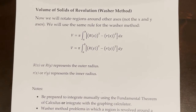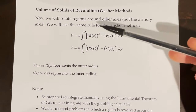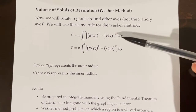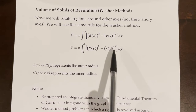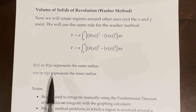In this video, we will be using the washer method to find the volume of solids of revolution, except instead of rotating regions around the x and y axes like we did in the previous video, we will now be rotating regions around other axes. However, we will be using the same rule: V equals pi times the integral from a to b of big R(x) squared minus little r(x) squared dx, or big R(y) squared minus little r(y) squared dy. Big R represents the outer radius and little r represents the inner radius.